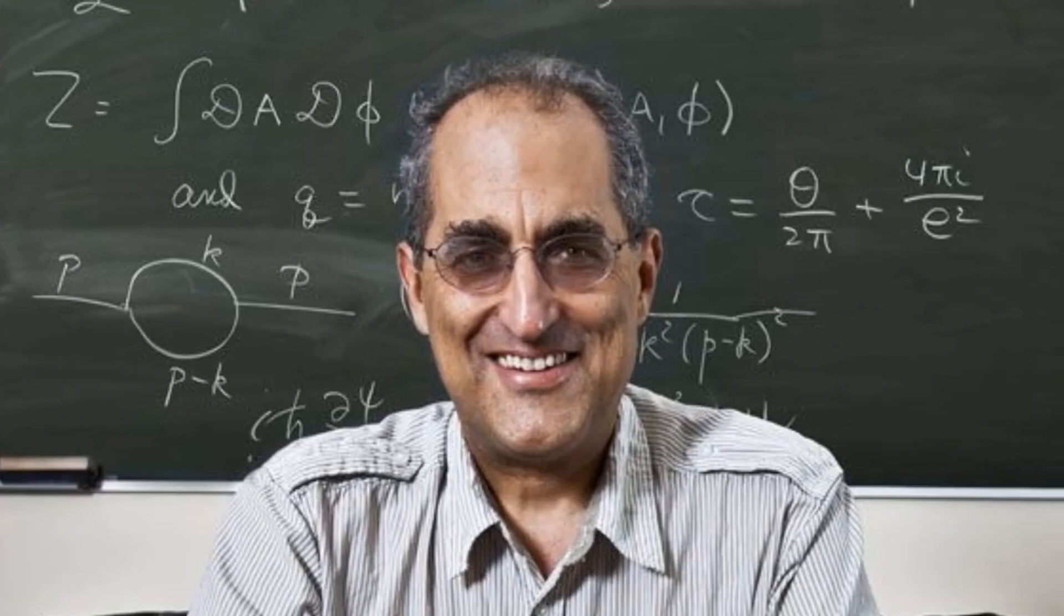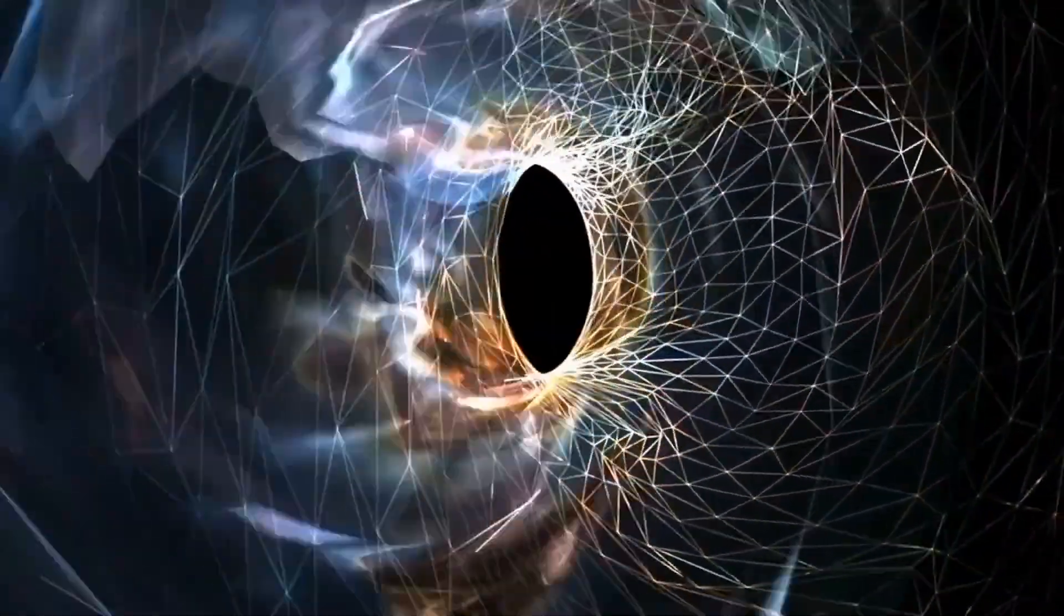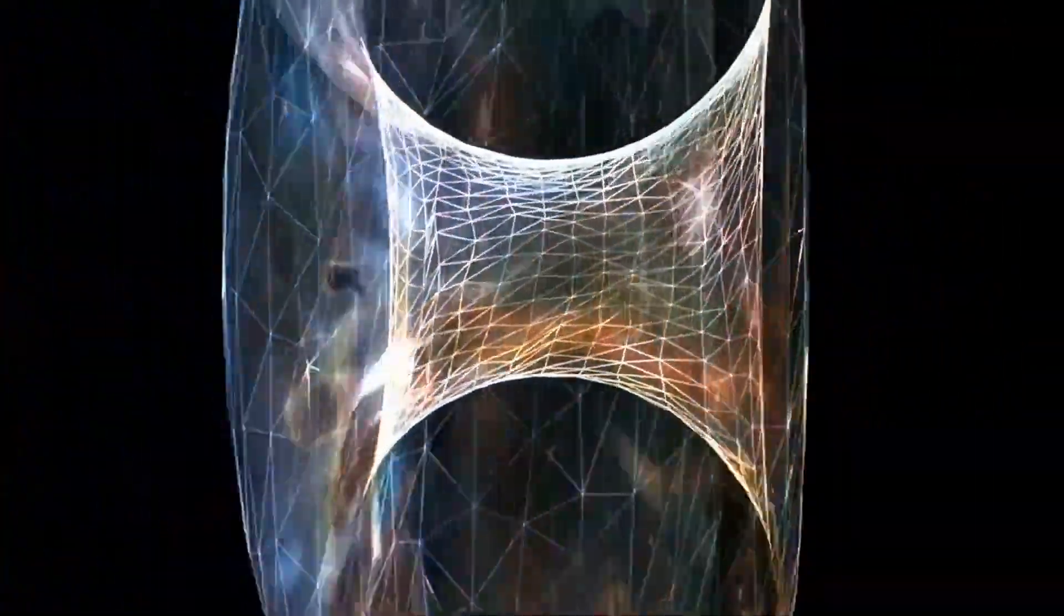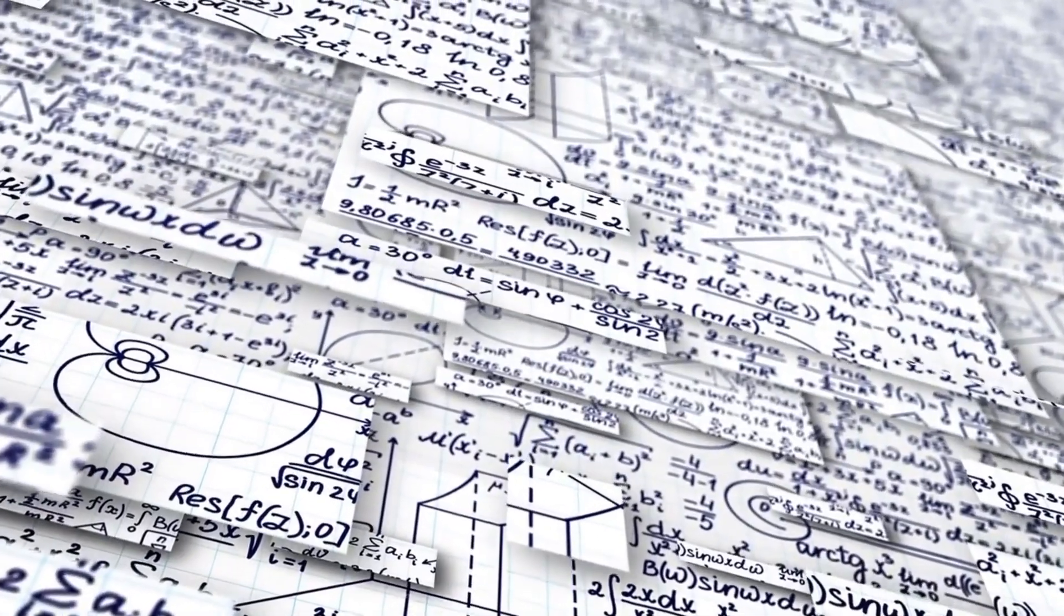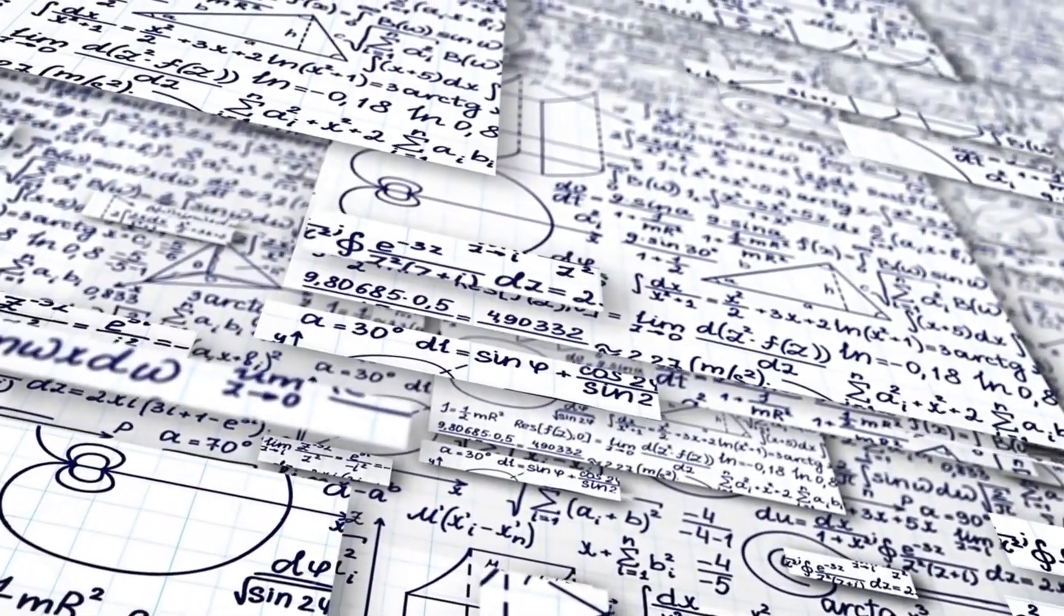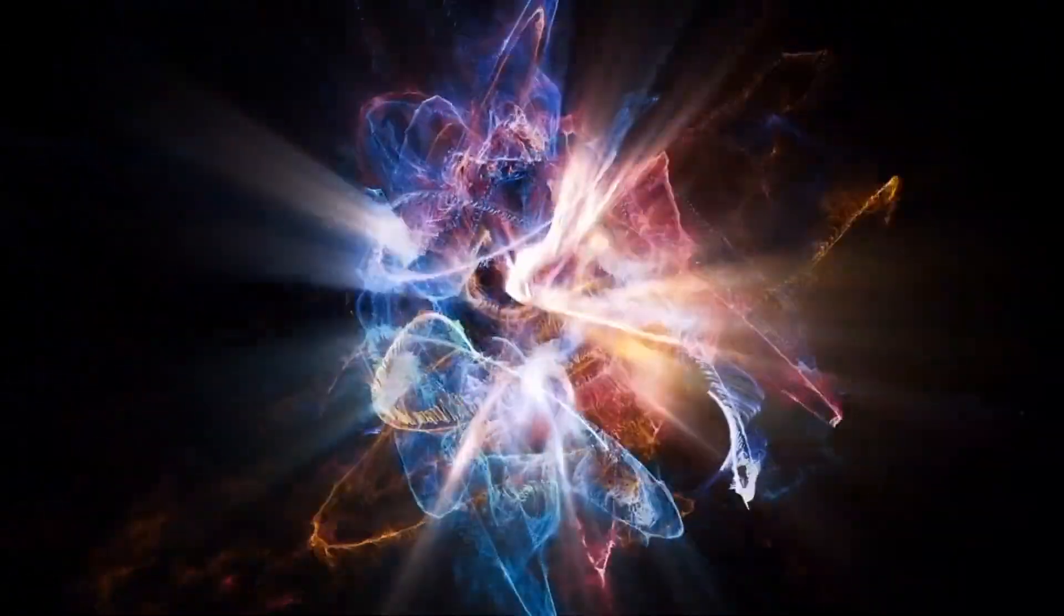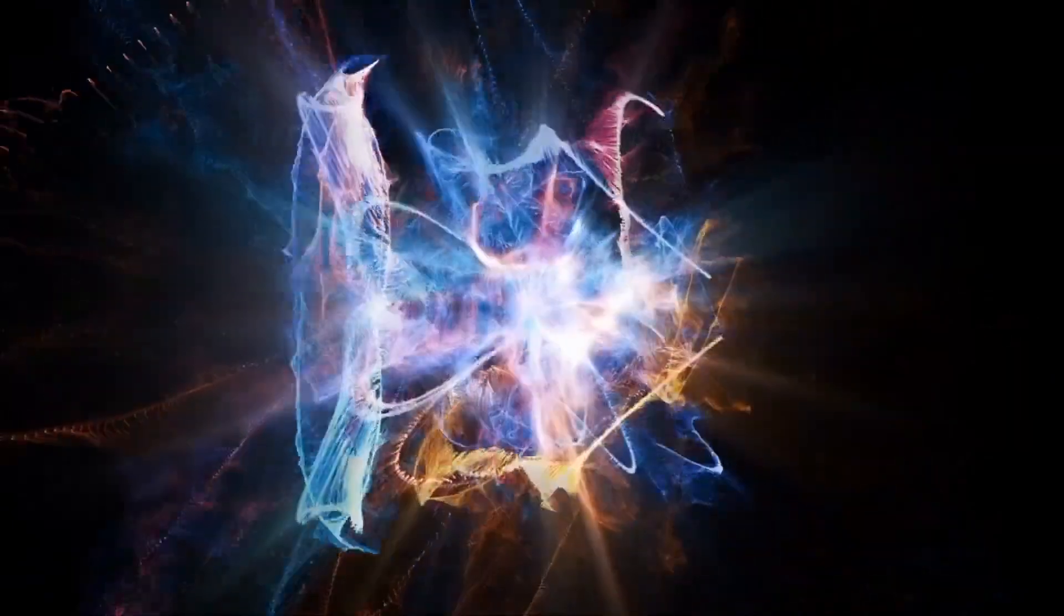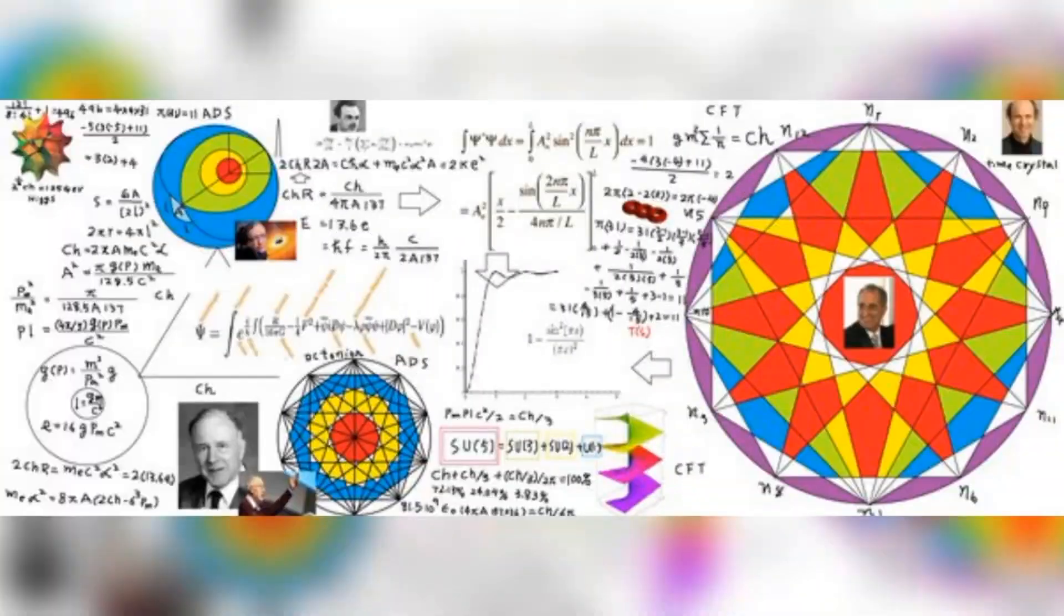Edward Witten, a towering figure in theoretical physics, has made seminal contributions to both string theory and quantum field theory. His insights have illuminated the deep connections between seemingly disparate areas of physics, mathematics, and even philosophy. Witten's work has played a pivotal role in advancing our understanding of string theory and its implications for fundamental physics. His research has shed light on the mathematical structure of string theory, the emergence of new symmetries, and the interplay between string theory and other branches of physics.